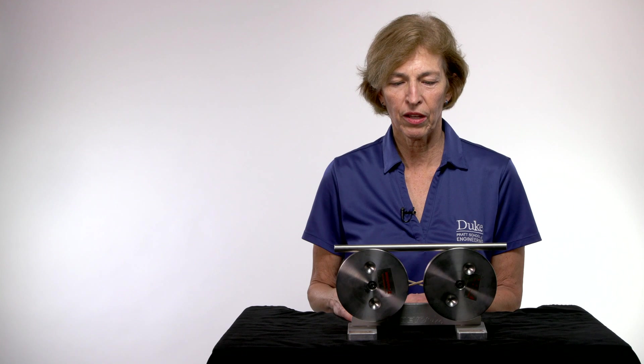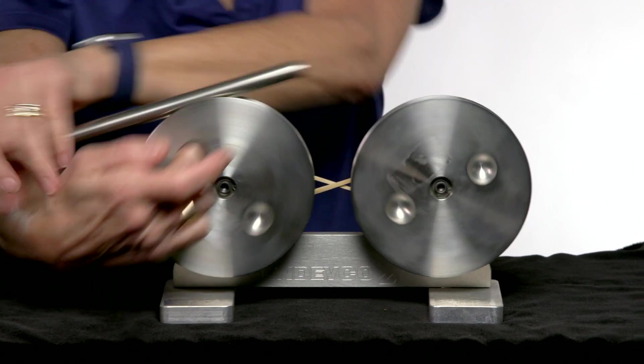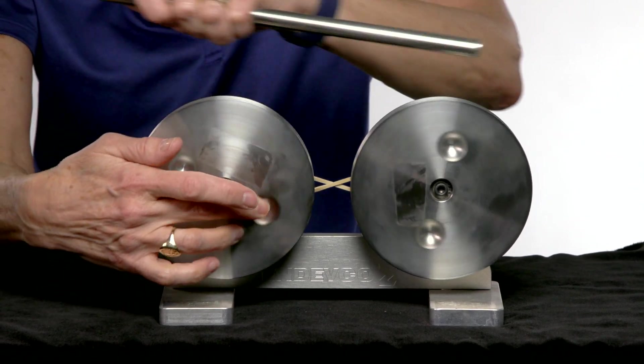Now, as a second set of examples here, I'm going to turn the wheel to the outside and see what happens to the bar. Didn't oscillate that time. We're going to try to understand this using principles of science and math.